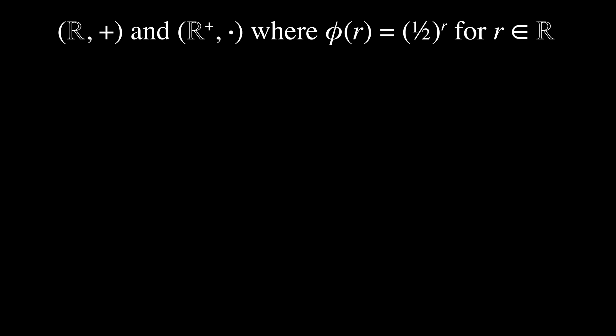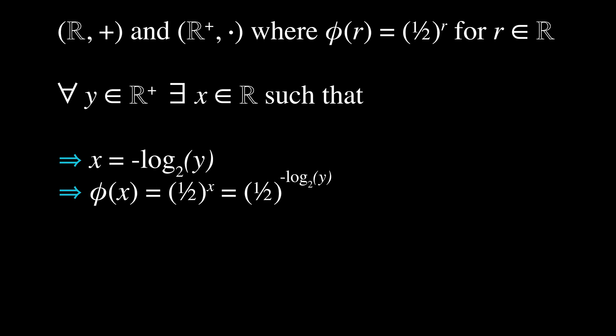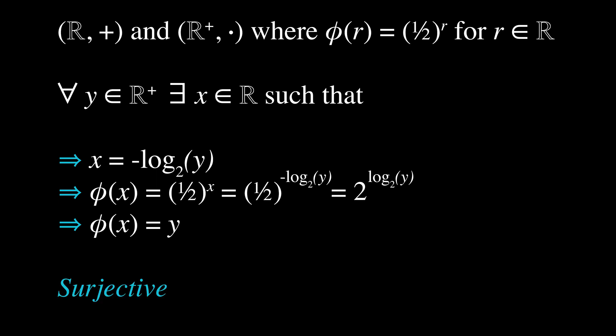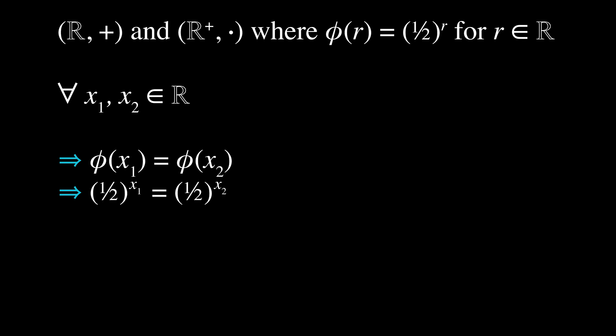Here is another example. Let's say we have the binary structures (ℝ, +) and (ℝ⁺, ·), and say φ(r) = (1/2)^r for r in ℝ. Are these two binary structures isomorphic? Let's first show it is surjective. Suppose for all y in ℝ⁺, there exists an x in ℝ such that x = −log₂(y). Then φ(x) = (1/2)^x = (1/2)^(−log₂(y)) = 2^(log₂(y)) = y by the logarithm property. Since φ(x) = y, we have shown it is surjective. Now we show it is injective: suppose for all x₁, x₂ in ℝ, φ(x₁) = φ(x₂), then (1/2)^x₁ = (1/2)^x₂, which implies x₁ = x₂. Hence it is injective.